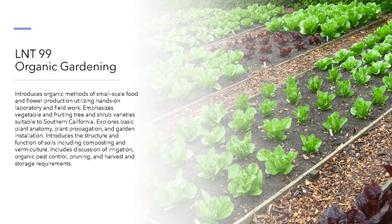LNT 99, Organic Gardening. This class introduces organic gardening methods of small-scale food and flower production, utilizing hands-on laboratory and fieldwork. It emphasizes vegetable and fruiting tree and shrub varieties suitable to Southern California, and explores basic plant anatomy, propagation, and garden installation. It introduces the structure and function of soils, including composting and vermiculture, and discusses irrigation, organic pest control, pruning, and harvest and storage requirements.